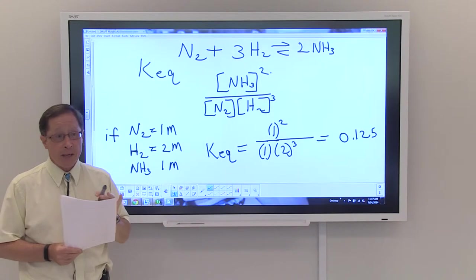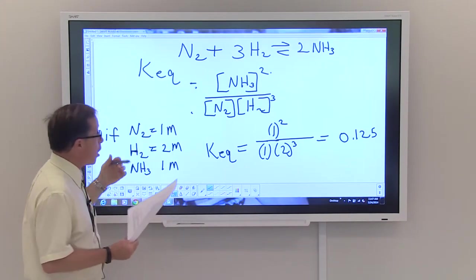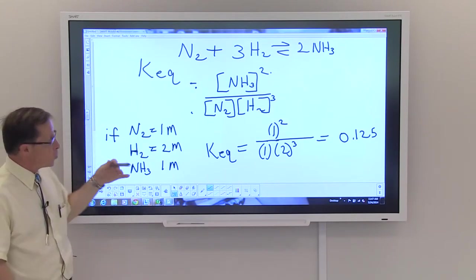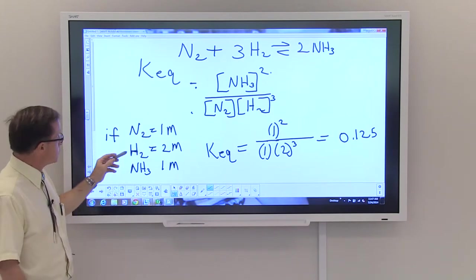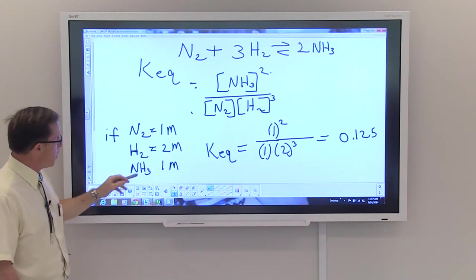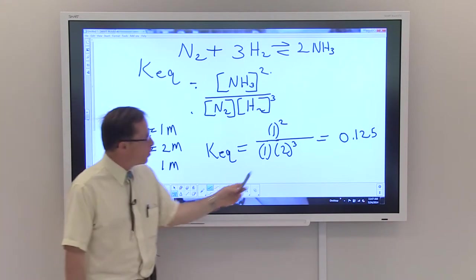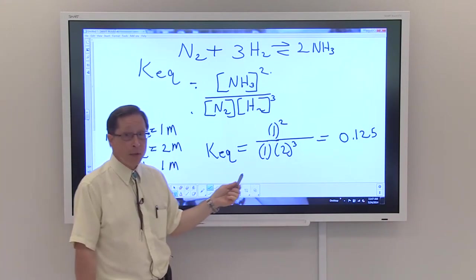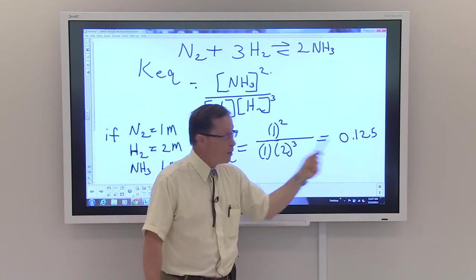It's easy to solve for KEQ once you have your expression. All you do is substitute numbers. On the left hand side, I've given you some numbers that we can use. Nitrogen is one mole, hydrogen would be two moles, ammonia is one mole. We put this into the equation, and we remember to square and cube the numbers that we need to square and cube. When we calculate that, we get a value of 0.125.